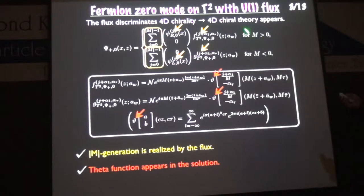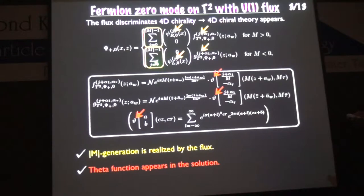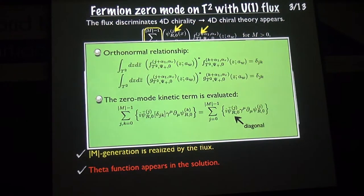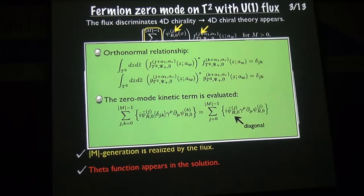Next, we examine the zero-mode profile on this geometry. After solving the equation of motion, we find the solution. The index runs from 0 to M minus 1, so M generations are realized after introducing the magnetic flux. The zero-mode profile is described by the theta function, which is a complicated function. We can then execute the overlap integrals, and we can see that N generations of matter appear.